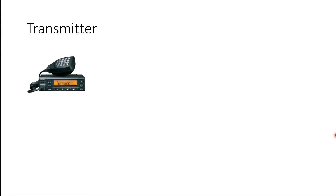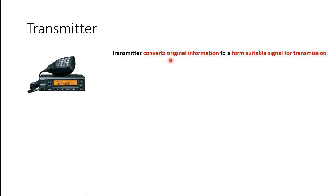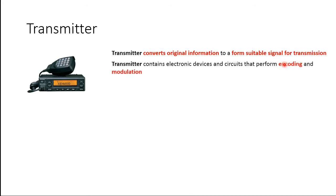Let's talk about the transmitter. This is a radio transceiver that is capable of transmitting and receiving signals. The transmitter converts original information into a form suitable for transmission. The transmitter also contains electronic devices and circuits that perform encoding and modulation. Since it is a transceiver, it has components for both the transmitter side and the receiver side.